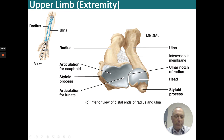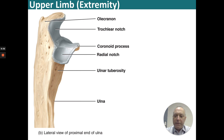Here is another look at the ulna with its olecranon and trochlear notch, the coronoid process, a radial notch, and the ulnar tuberosity.